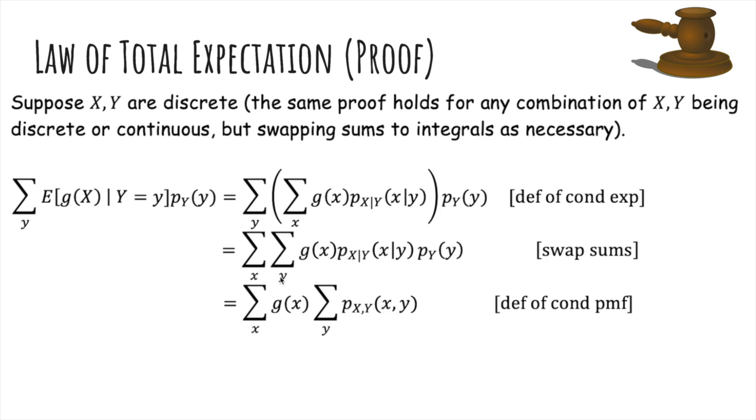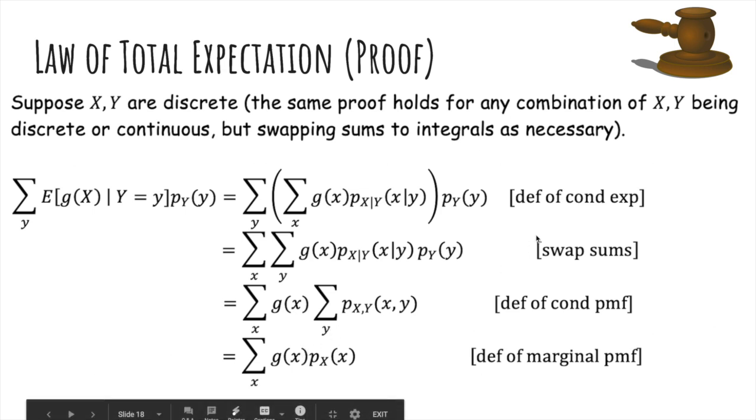And then when we move the sum, we move the g(x) inside here because it doesn't depend on y. Then this thing is just the marginal PMF of X because we sum over all y's, and so this is finally expected value of g(X) as we want it to be.